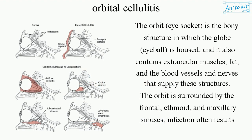The orbit, or eye socket, is the bony structure in which the globe (eyeball) is housed. It also contains extraocular muscles, fat, and the blood vessels and nerves that supply these structures.